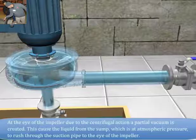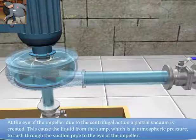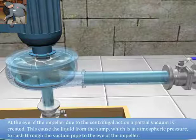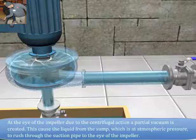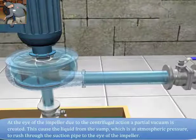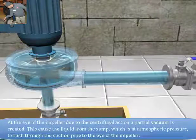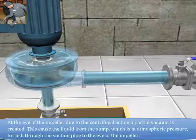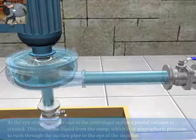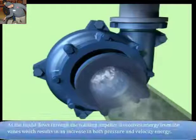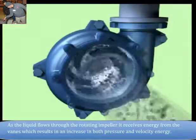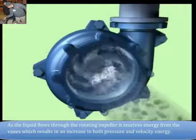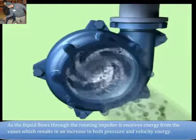At the eye of the impeller, due to the centrifugal action, a partial vacuum is created. This causes the liquid from the sump, which is at atmospheric pressure, to rush through the suction pipe to the eye of the impeller. As the liquid flows through the rotating impeller, it receives energy from the vanes which results in an increase in both pressure and velocity energy.